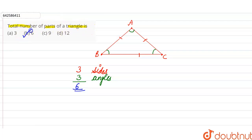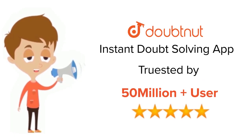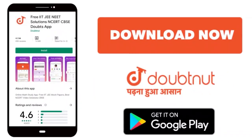So option B is the correct option. For class 6th to 12th, up to IIT-JEE and NEET level, trusted by more than 5 crore students. Download Doubtnet app today.